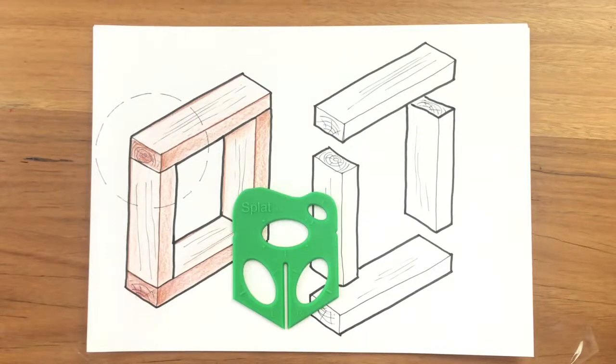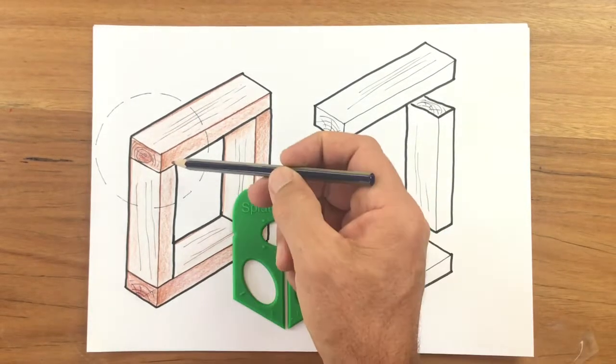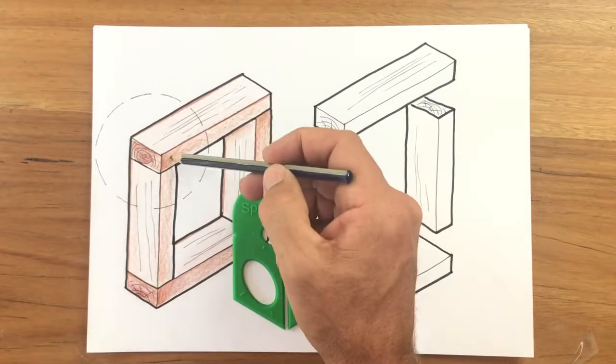Hi, today you'll be drawing a timber joint called a butt joint. Two pieces of timber simply butted together.